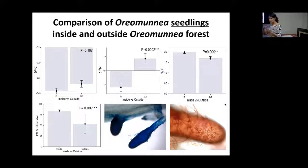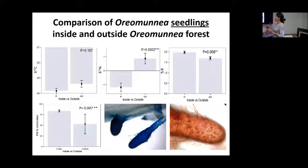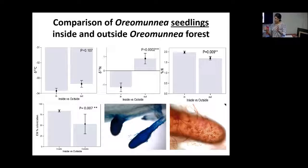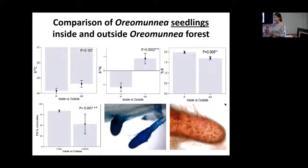Oremunia inside the forest was receiving more delta-15N-enriched nitrogen from ectomycorrhizae, supported by the higher percentage of ectomycorrhizal colonization. These plants, even though growing in nitrogen-rich soil, are depleted in their leaves because they are receiving all that nitrogen mostly from the mycorrhizal fungi — specifically from the fungi absorbing nitrogen from the soil. The plant is not absorbing it on its own; it is depending on the fungi to absorb that nitrogen.